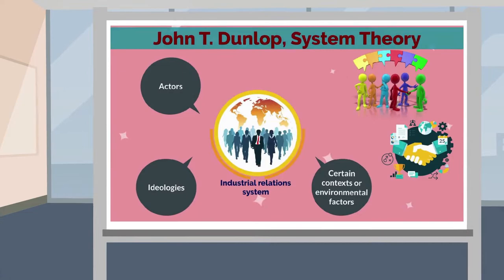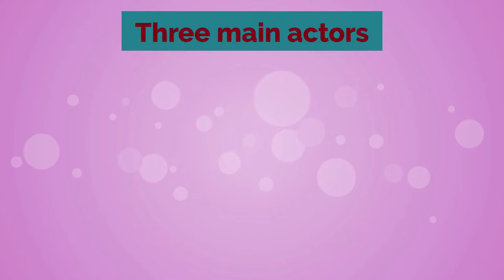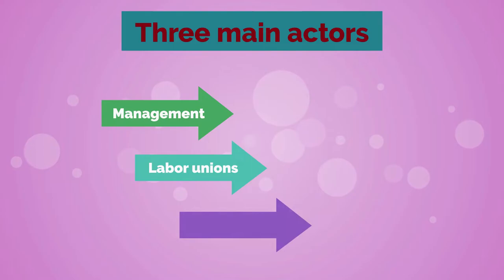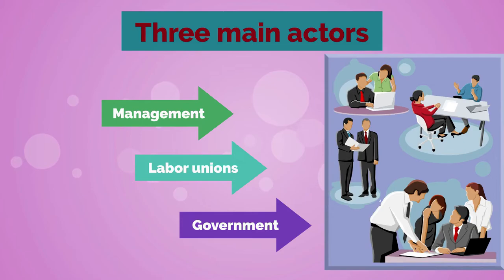But what does all this mean? To get a better understanding, let's explore these features. Dunlop proposed three main actors within the industrial relations system: management, labor unions, and government. These work in cohesion to create a set of rules in the workplace.